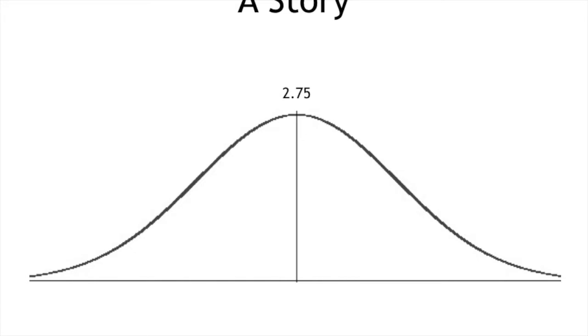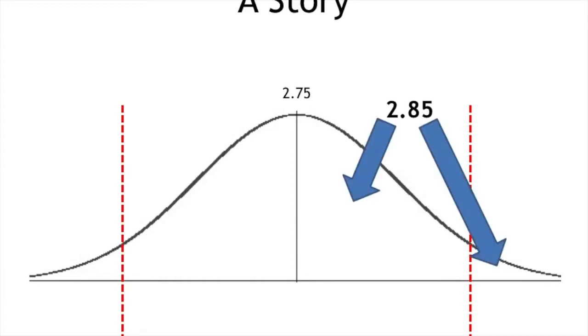If the average of the population is really 2.75, we know that about 95% of the samples we pull are going to be within two standard deviations above or below that mean. So what we really need to know is if that sample GPA of 2.85 falls within the range of 95% of the possible samples, or is it way out in the tail where it's really unlikely that it represents the population?